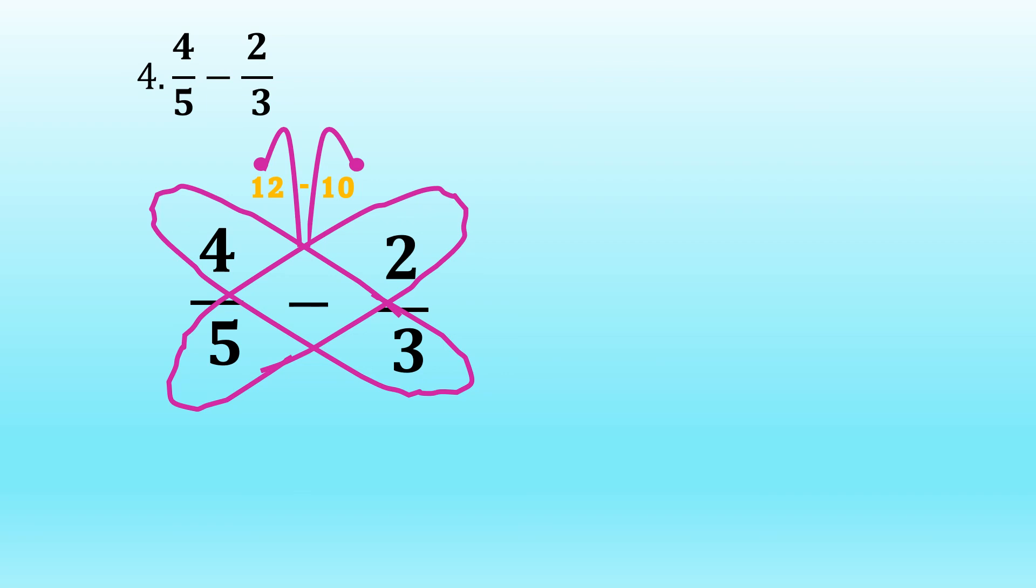Then, drawing the tail of our butterfly, we multiply five times three, which is equal to fifteen. We have here twelve minus ten over fifteen is equal to two over fifteen.